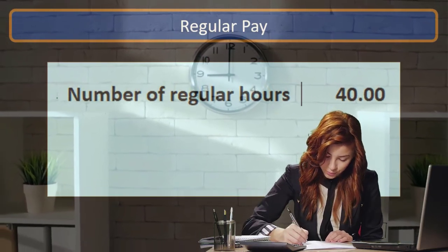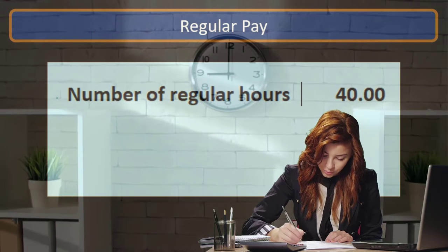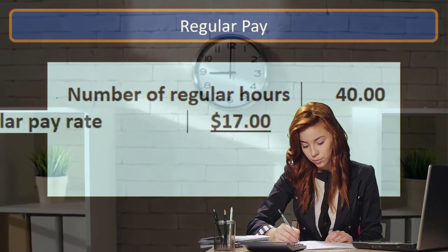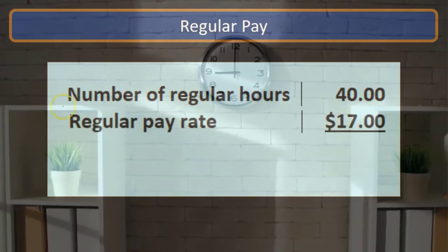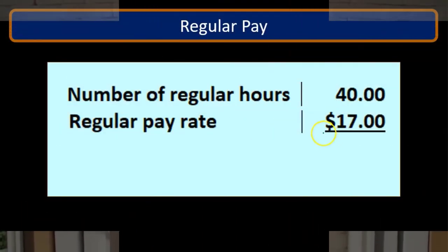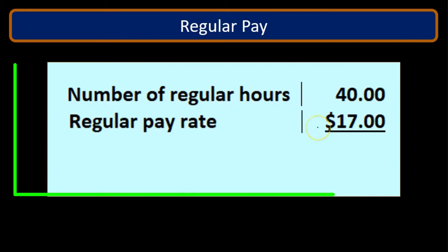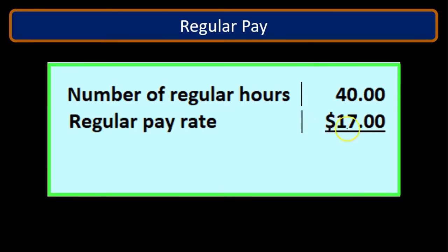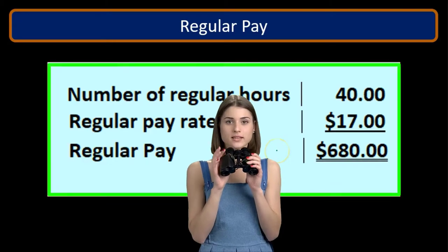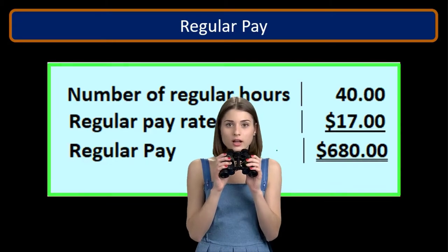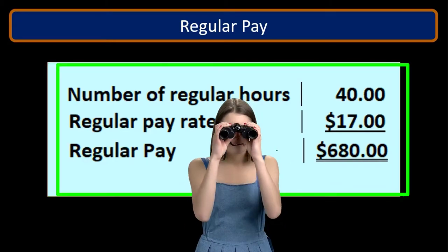Once we know the hours — in this case 40 hours in the work week — it's just a matter of multiplying by the pay rate, which would be whatever is agreed upon in the terms of employment, in this case $17. So 40 times $17 gives us $680 for regular pay.